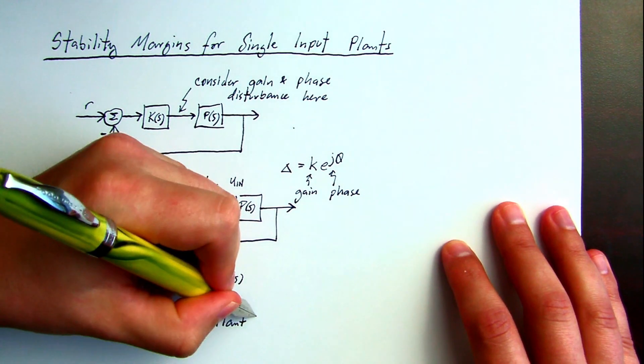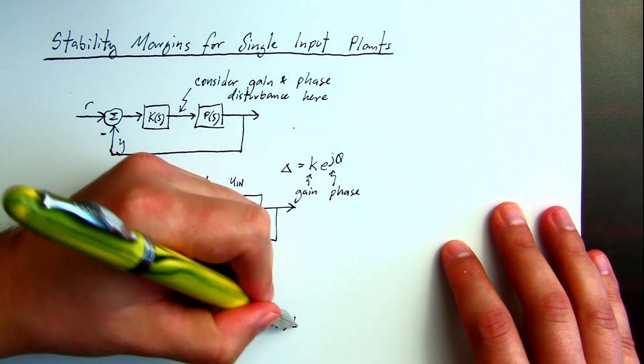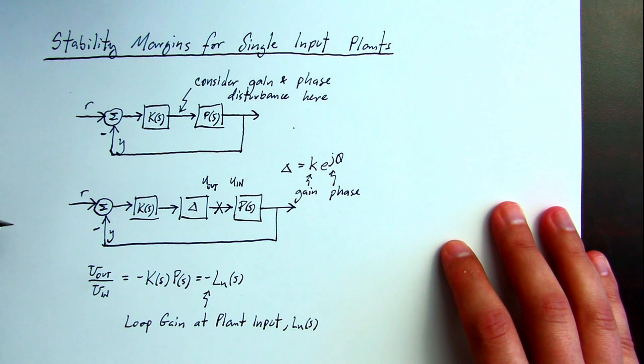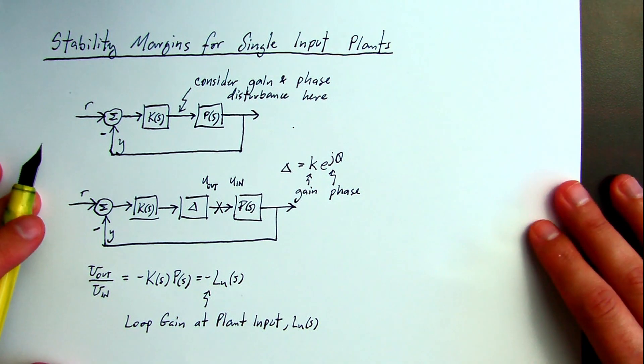We see the loop gain up here denoted LU of S. U just denotes that it's at the plant input.